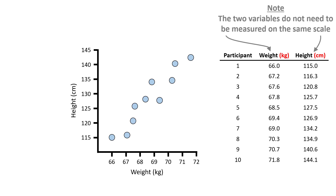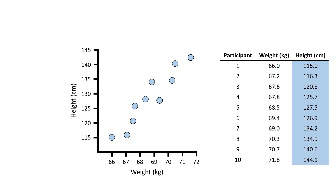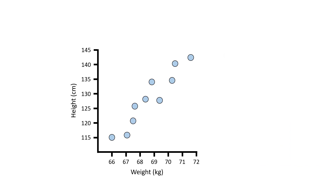You can clearly see that the values of weight vary between different participants. Similarly, the values for height also vary between different participants. And as shown in this graph, the two variables tend to vary together — that is, as the value of weight increases, so does the value for height, and they seem to do so in a linear fashion.